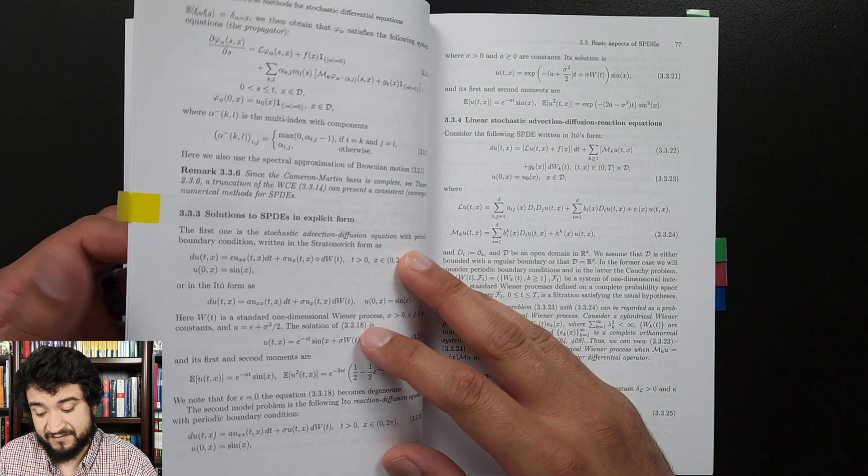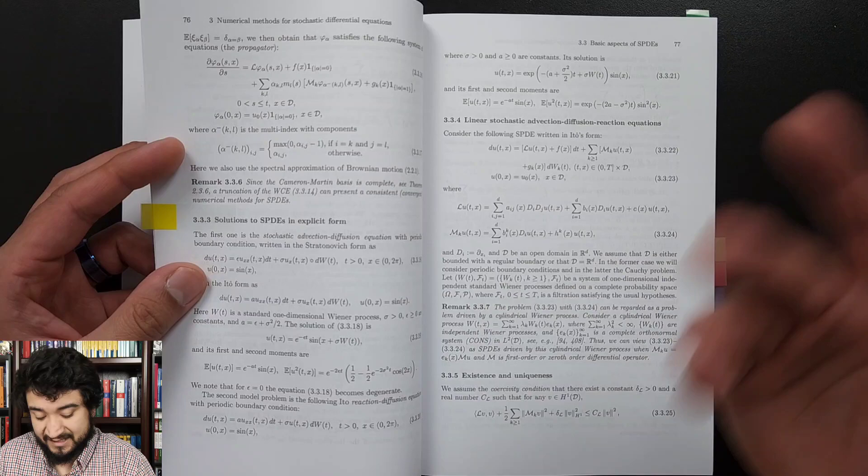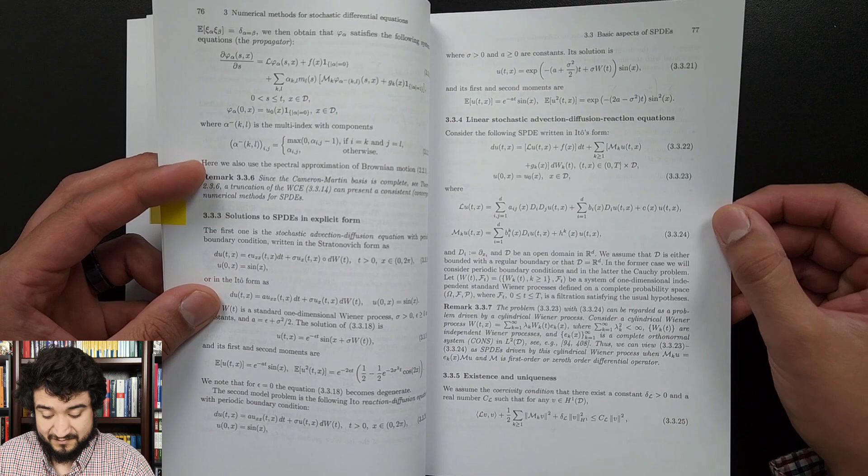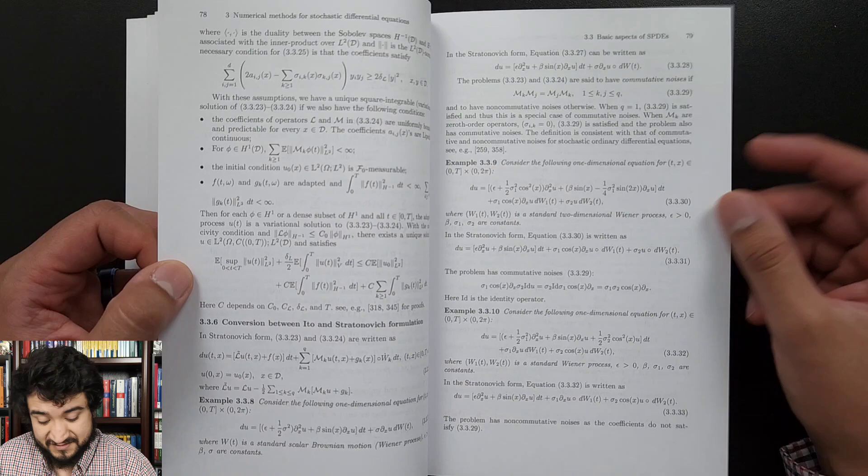For existence and uniqueness—for all of these more advanced topics like functional analysis, Hölder continuity, Lipschitz conditions, existence and uniqueness as a whole, convergence as well—you're going to want to have a more technical math background to understand this.